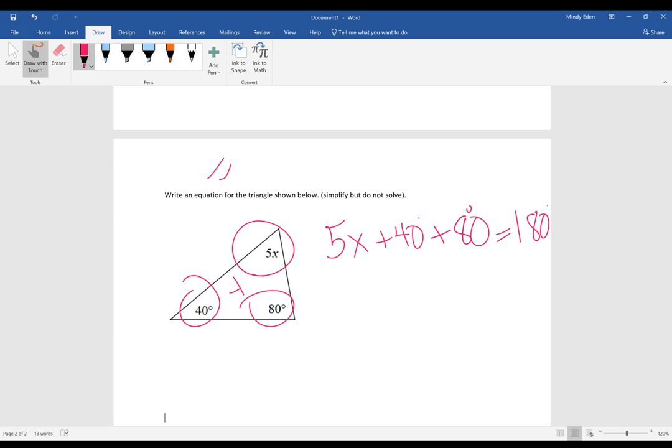So I see an equal sign which means I have an equation, and I've got all three added together to give me my total. Now it asks us to simplify but not to solve.